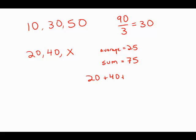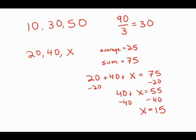20 plus 40 plus x equals 75. Subtract 20 from both sides: 40 plus x equals 55. Subtract 40 from both sides, and we get x equals 15. This is answer choice A.